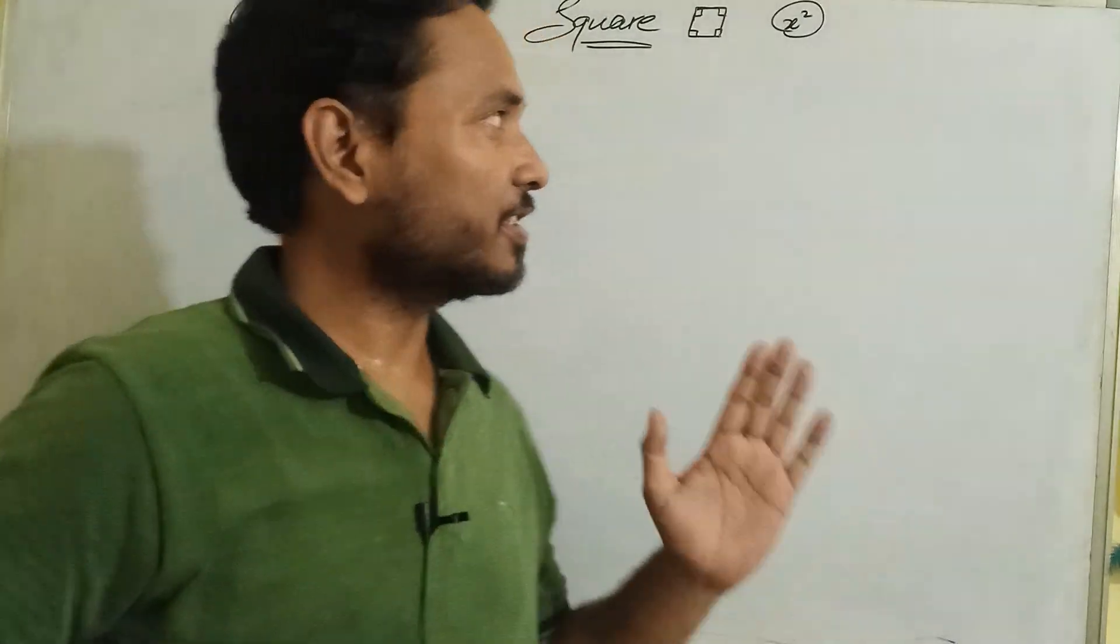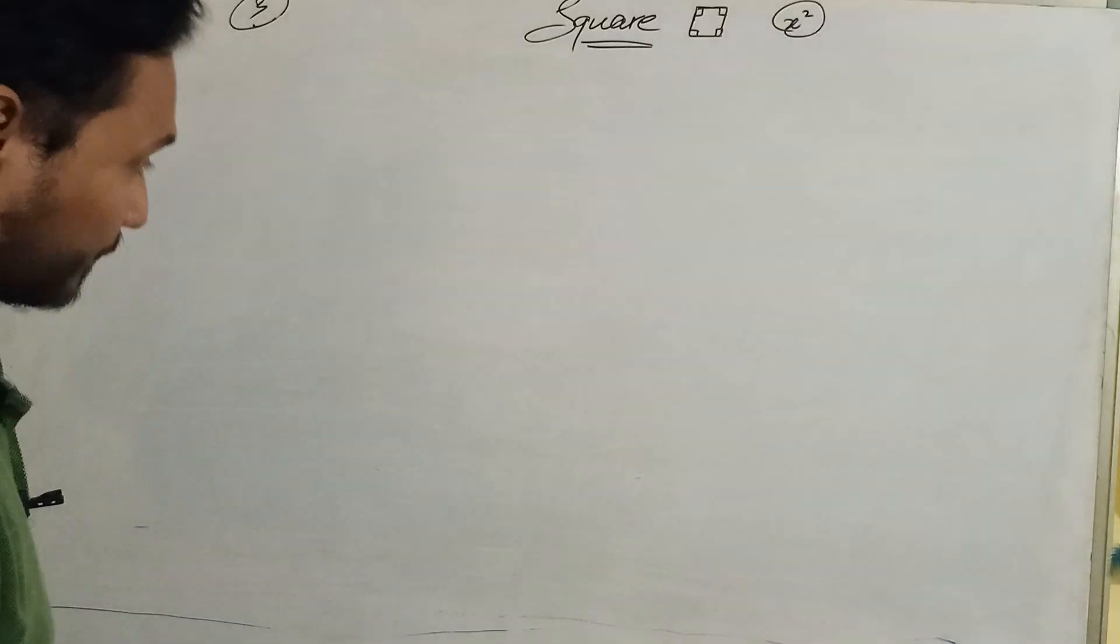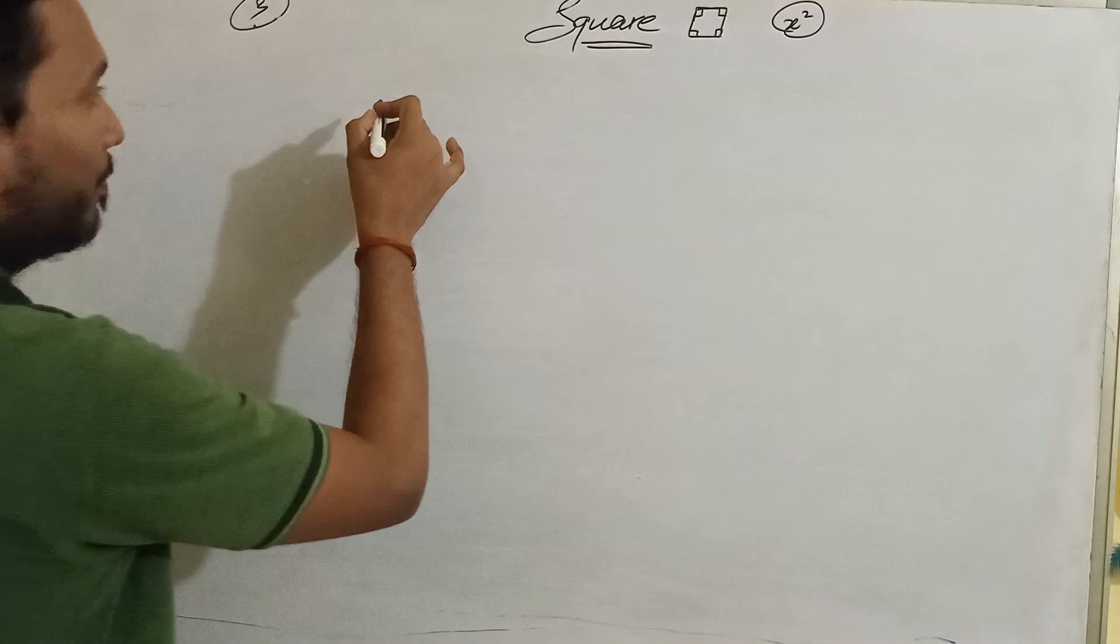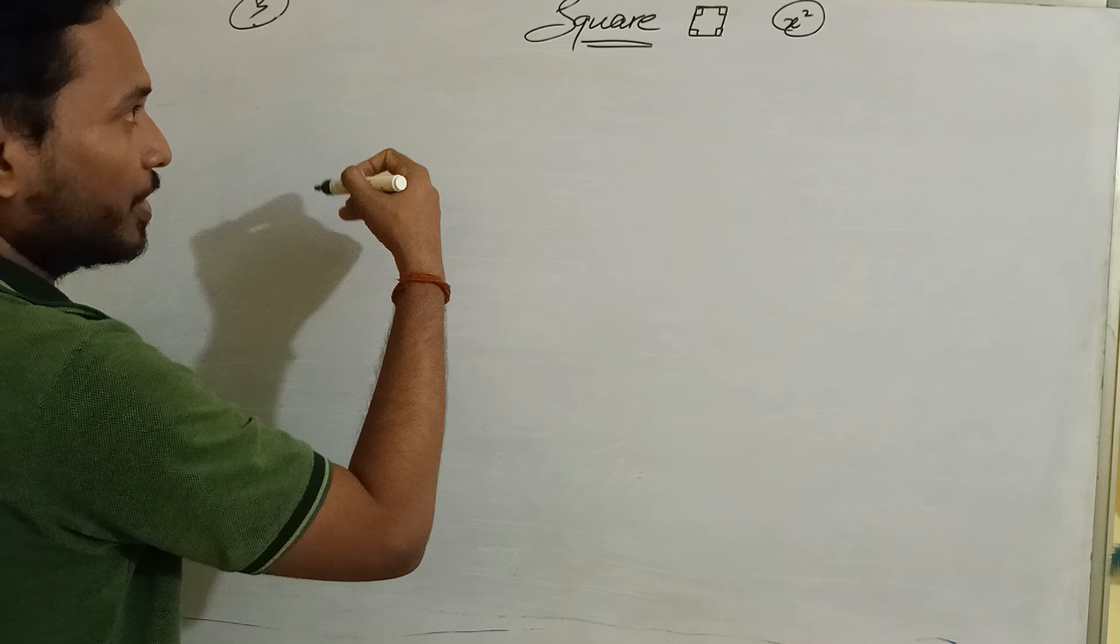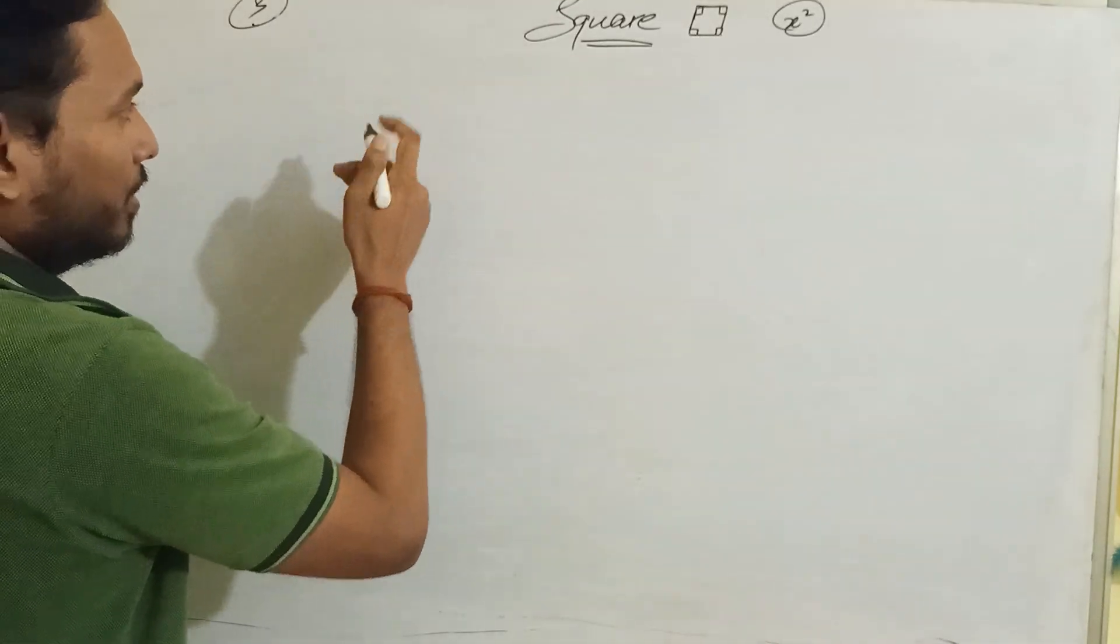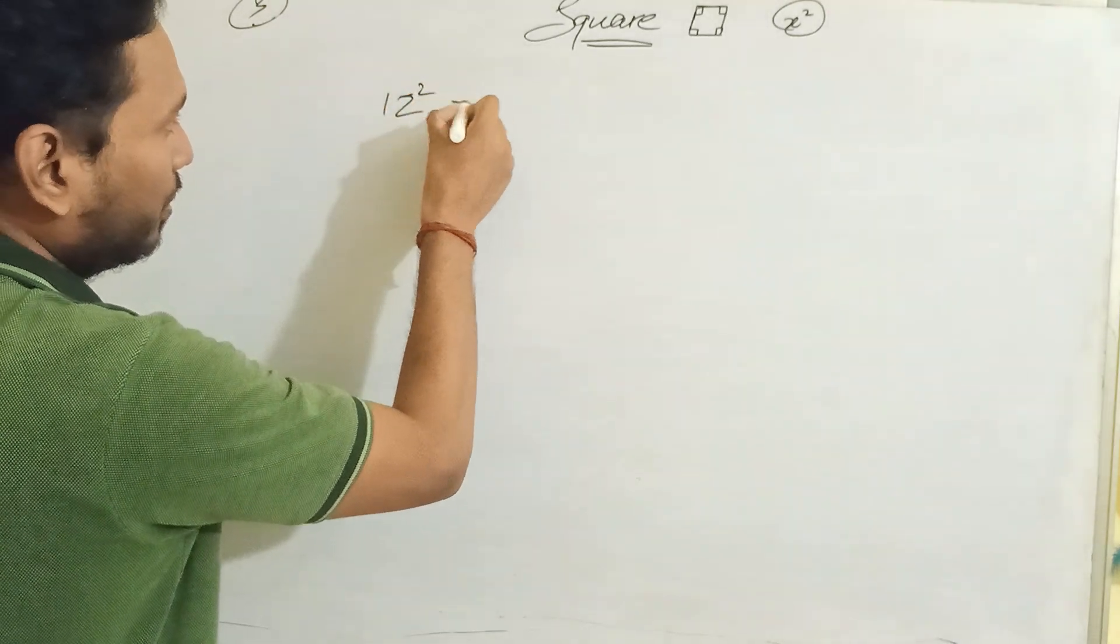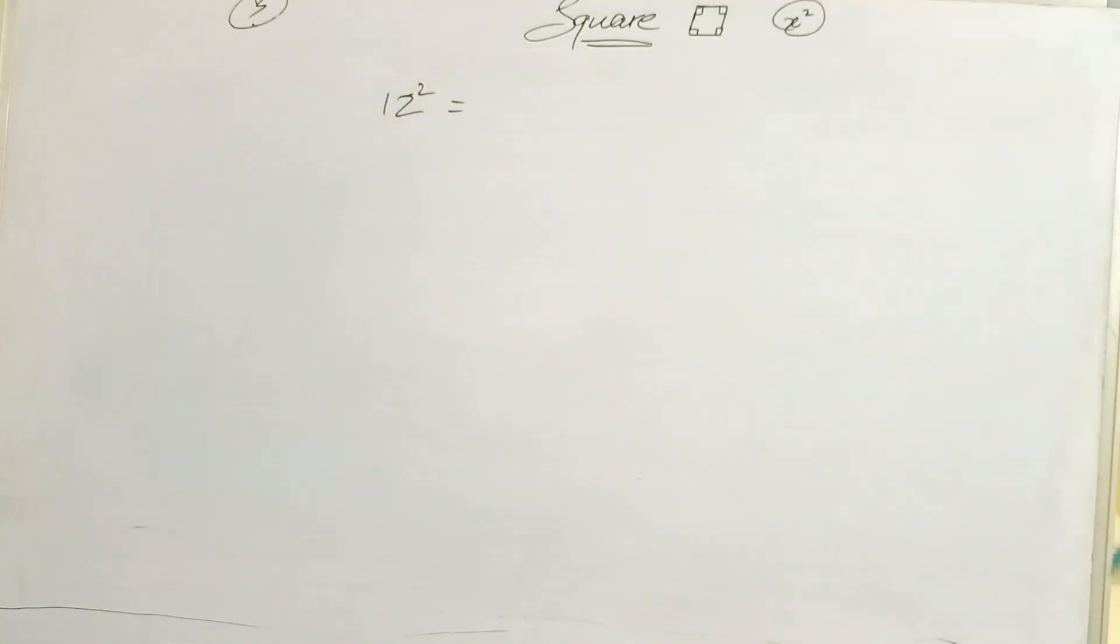My dear students, this is the third video of the square series. Here we will find out a new way to solve the same previous problem. Take a number 20 square - what will be the square of this number?